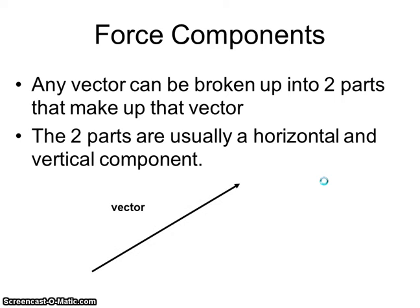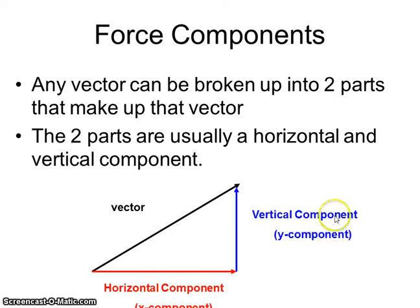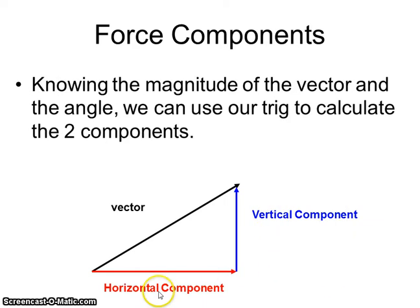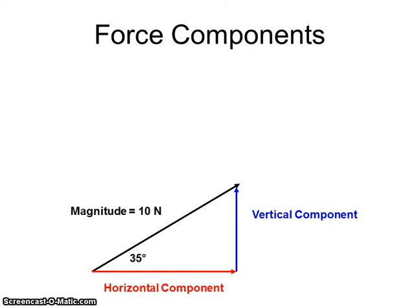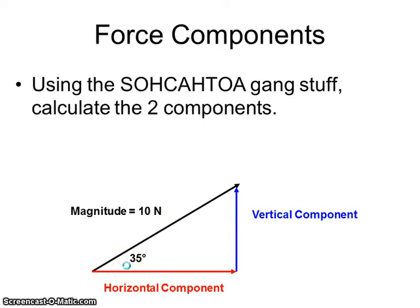So now, what we can do is take this force vector and break it up into the two components that make up that force. A vertical and a horizontal. We can use our trig to calculate that. So let's say that we're exerting a force of 10 newtons at an angle of 35 degrees with the horizontal. So now we can use our SOHCAHTOA to calculate those two sides.